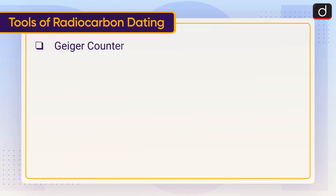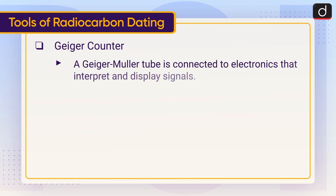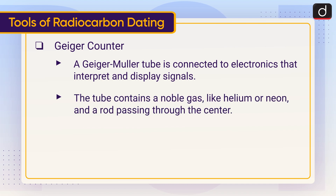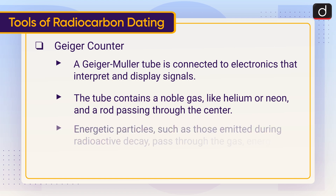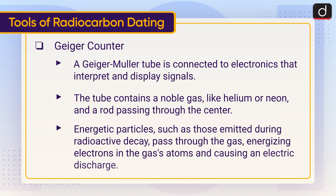Geiger counter: A Geiger-Müller tube is connected to electronics that interpret and display signals. The tube contains a noble gas like helium or neon, and a rod passing through the center. Energetic particles, such as those emitted during radioactive decay, pass through the gas, energizing electrons in the gas atoms and causing an electric discharge.